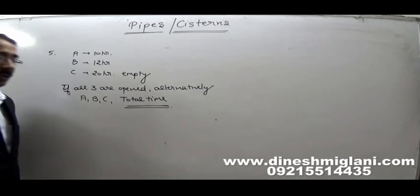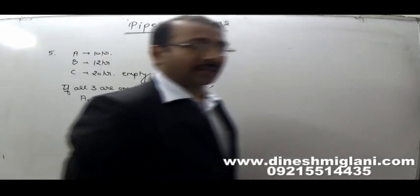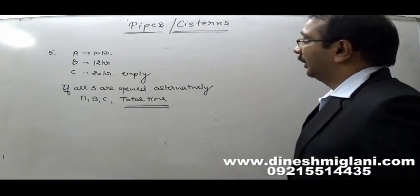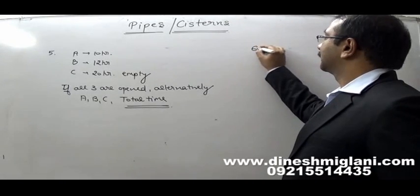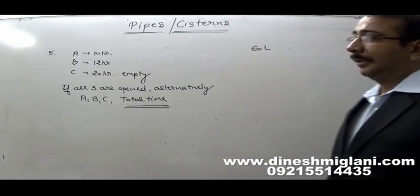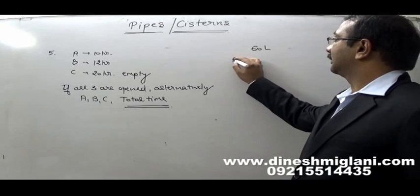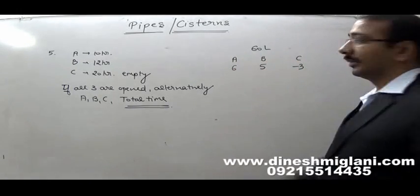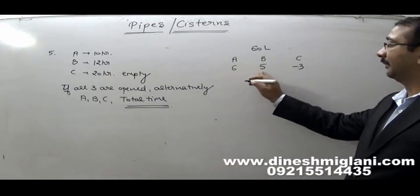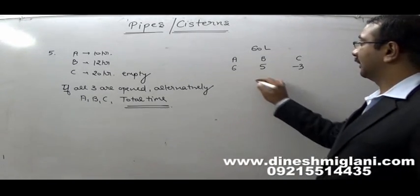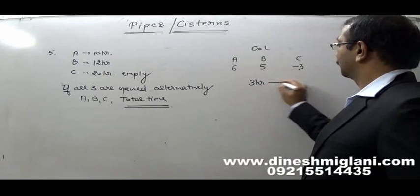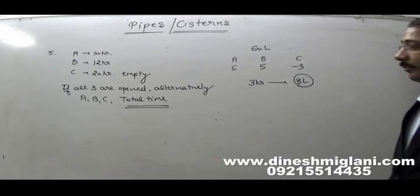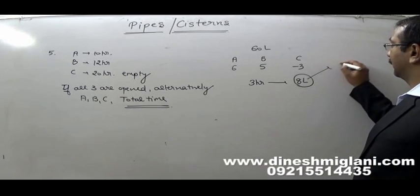For alternative type questions, take the LCM of 10, 12 and 20, which is 60 liters. In 1 hour: A fills 6, B fills 5, C empties 3. Effectively in 3 hours, 6 + 5 − 3 = 8 liters are filled. My target is 60 liters.